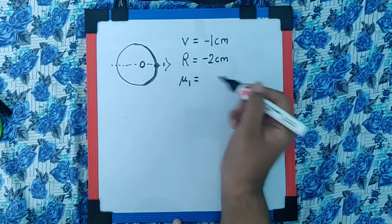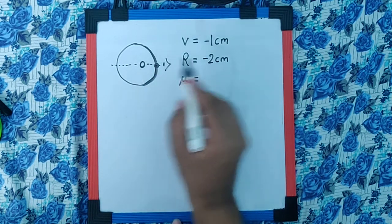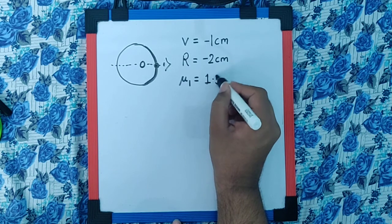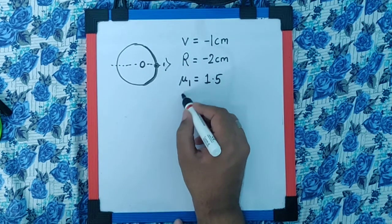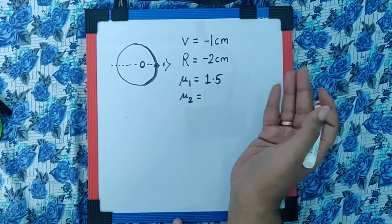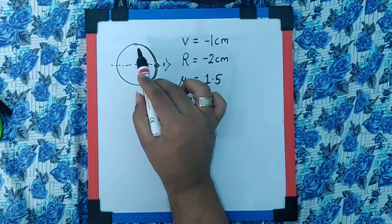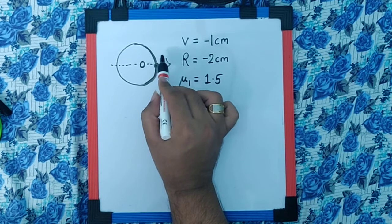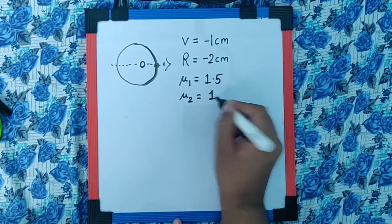We can say mu 1 is the refractive index where the object is placed. So that is 1.5 because it is inside the glass sphere. Mu 2 is the second surface which happens to be found after the refraction is taking place. So after the refraction the light must go in the air. So mu 2 must be 1.